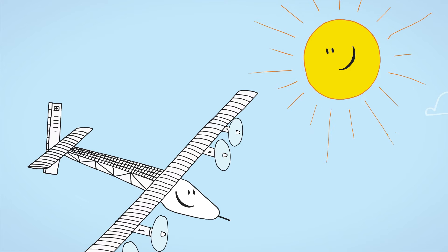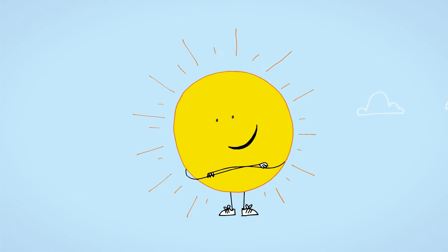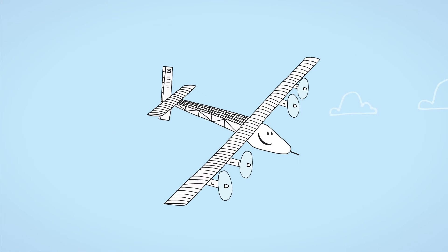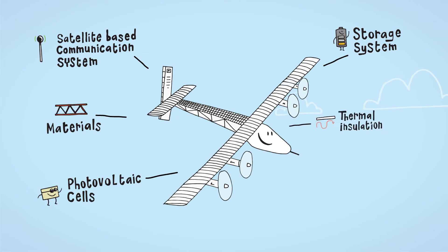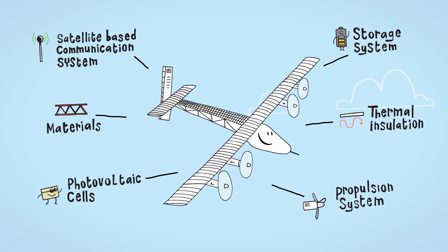Solar Impulse is a revolutionary airplane getting all its energy from an unlimited source, the Sun. Every single part of this flying laboratory has been engineered by the technical team led by André and supported by a family of partners brought in by Bertrand.